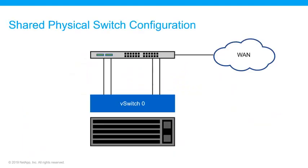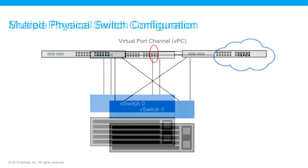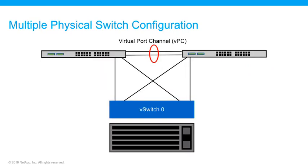In this example, the physical NICs used by the V-switches hosting both the internal and external network port groups are cabled to the same upstream switch. Switch traffic is kept isolated using broadcast domains contained within separate VLANs. However, the shared switch in this example is a single point of failure.